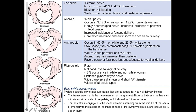The anthropoid or oblong type of pelvic shape is oval or oblong, with an AP diameter greater than the transverse diameter. The platypelloid pelvis has a transverse diameter longer than the AP diameter; it is a rare shape and is not conducive to vaginal delivery.